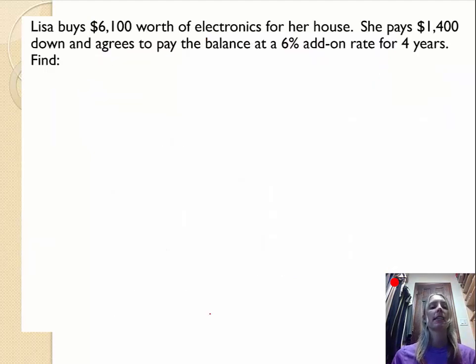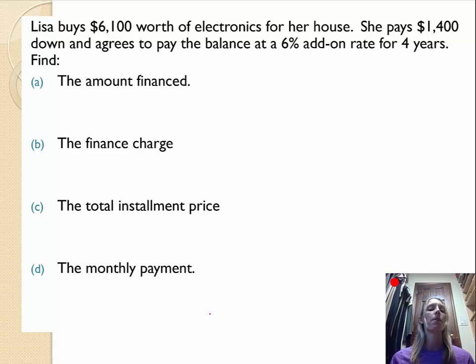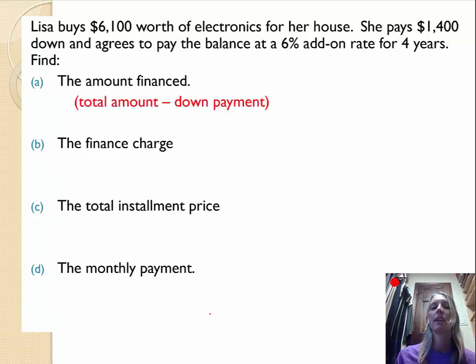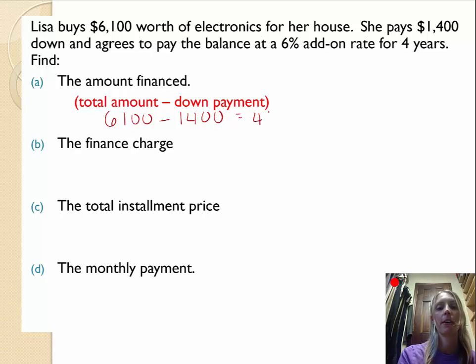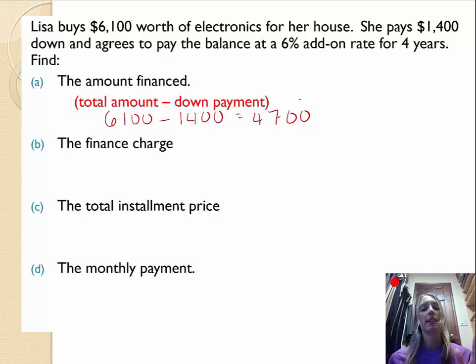Lisa buys $6,100 worth of electronics for her house. She pays $1,400 down and agrees to pay the balance at a 6% add-on rate for four years. Here are the four things we want to find. So first, the amount financed. Remember how we calculate the amount financed? That's the total amount, $6,100 minus the down payment, $1,400. And that value, our amount ends up being $4,700. So that's the amount financed. That's the amount that she has to borrow because that's what she's not paying on the spot.